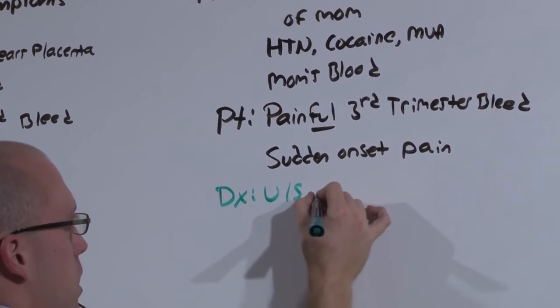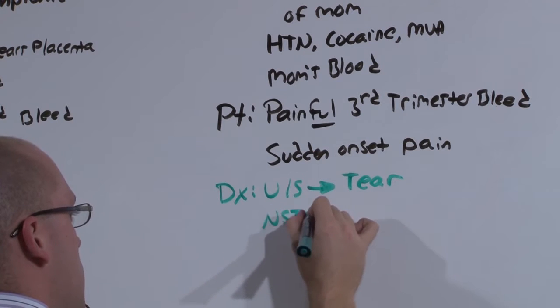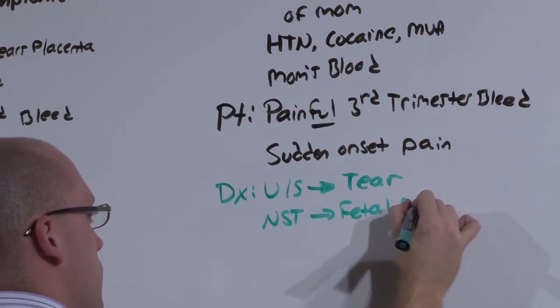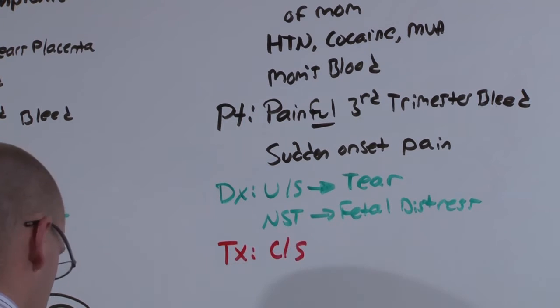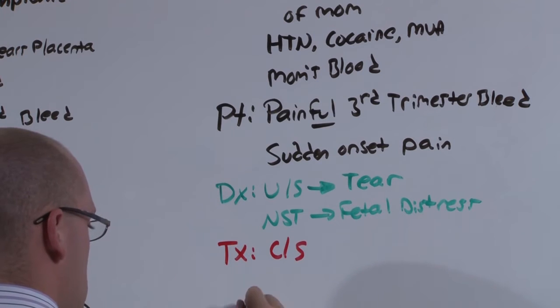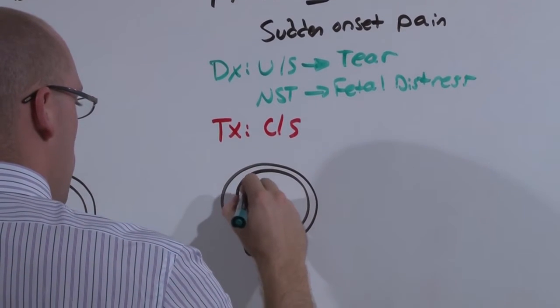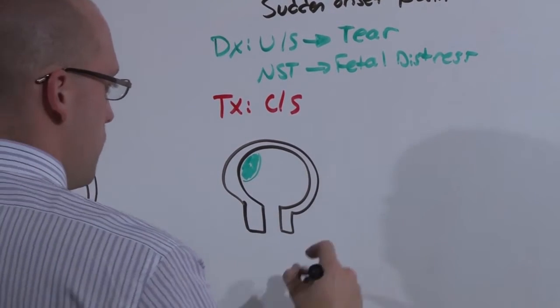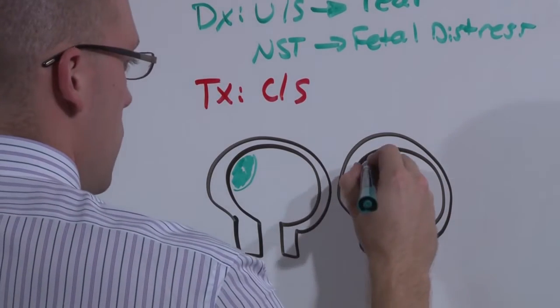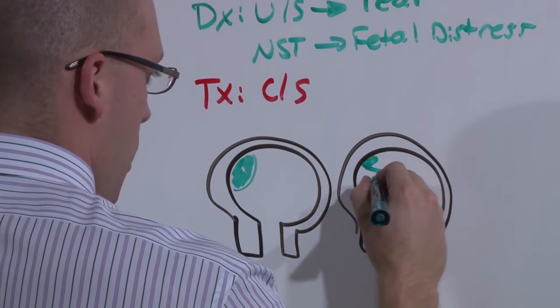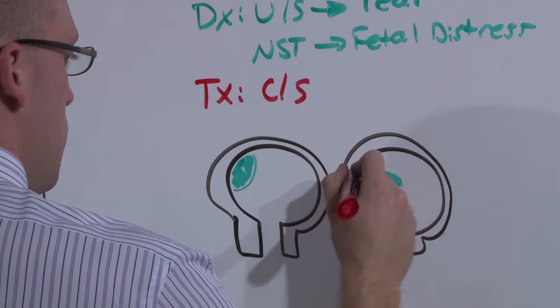But you're still going to do an ultrasound because we're an OB. And what you're going to see is the tear. And if you did an NST, you'd see fetal distress. And because you've got fetal distress, the treatment is to go to C-section. In this condition, you're going to have a normal placenta implanted in a normal place. Then some insult occurs that tears the placenta off the wall. So the placenta will still be connected somehow. But then where it was connected will bleed and bleed quite vigorously. And it is mom's blood that's bleeding.